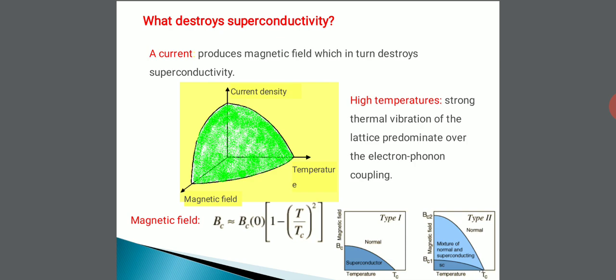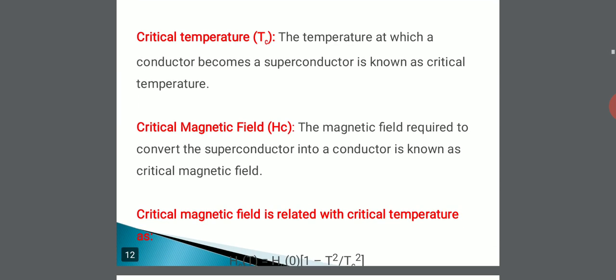Bc is equal to Bc of 0 times 1 minus T by Tc whole square. We will see those definitions here in a simple way.